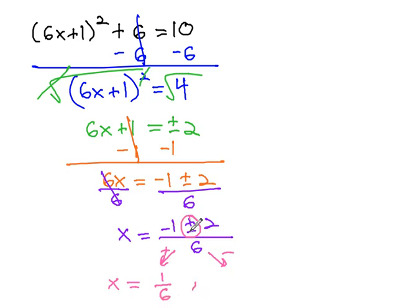And if we subtract, negative 1 minus 2 is negative 3 over 6. And of course that negative 3 over 6 reduces to negative 1 half. And we get our two solutions for x to be 1 sixth and negative 1 half.